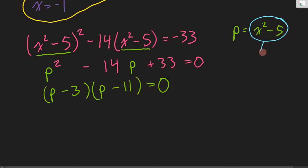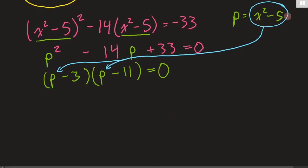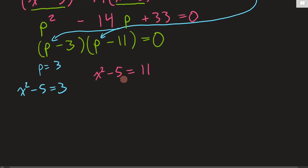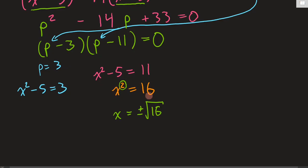Now we do our x² - 5 substitution as we solve. From p = 11: x² - 5 = 11, so x² - 5 becomes positive 5 on the other side, giving x² = 16. When undoing a square, there are two possible values: x = +√16 or x = -√16. Since negative 4 times negative 4 is also 16, and positive 4 times positive 4 is 16, x can be positive or negative 4.